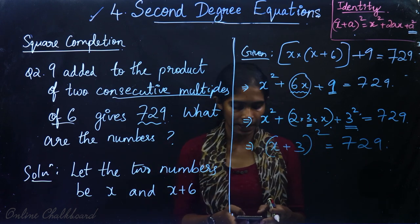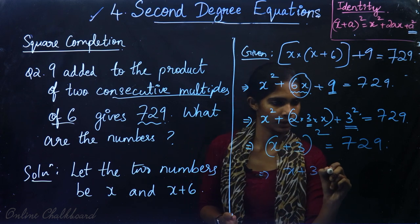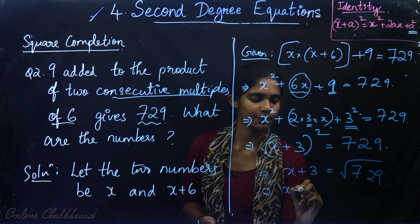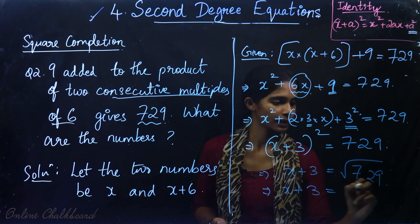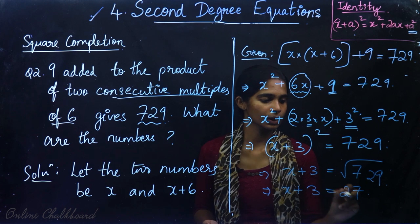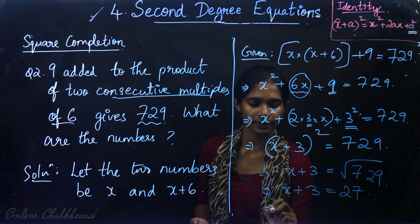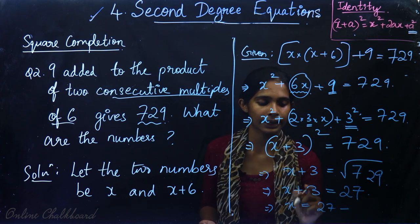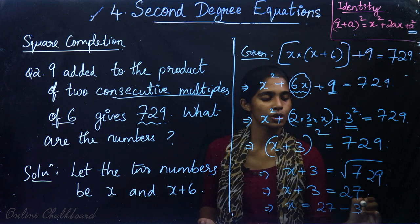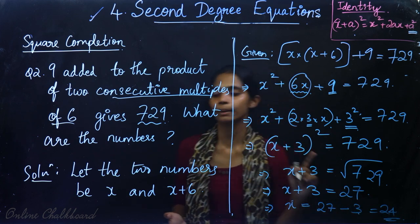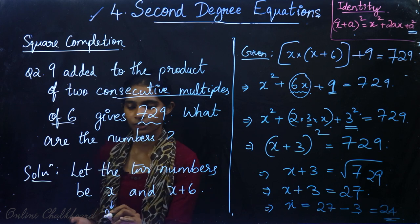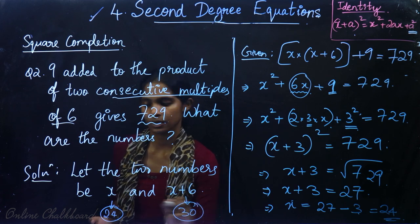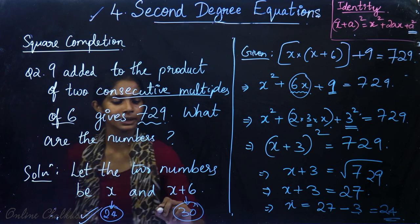From here, x plus 3 is equal to the square root of 729, which is 27. So x plus 3 equals 27, which implies x is equal to 27 minus 3, giving x equal to 24. The other number is x plus 6, which is 24 plus 6, equal to 30. Therefore, the two numbers are 24 and 30.